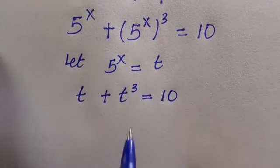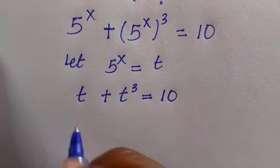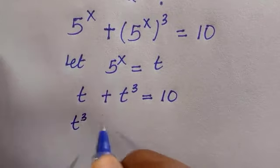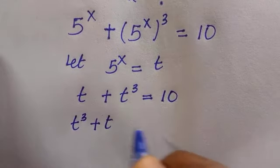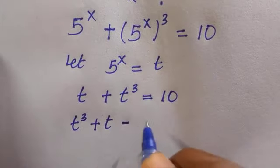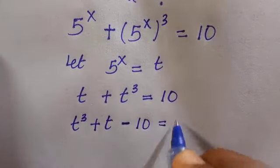The next thing is if I rearrange this to make t cubed start, then following plus t minus 10 equals 0.